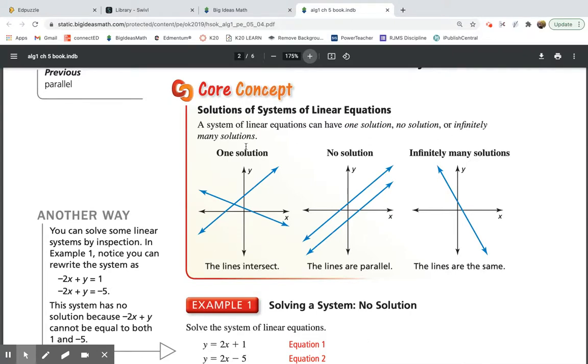So this one, one solution, the lines intersect. This one, no solution, the lines are parallel. And this one, infinitely many, the lines are the same because that's technically two lines is what they're saying. Okay, so you can pause the video if you need to, but you're going to copy those three things down. So do that now.